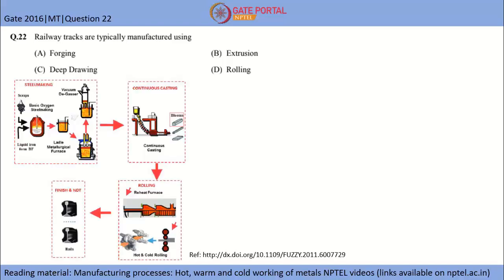So, this is a schematic which tells you how from steel making the railway tracks are manufactured. In extractive metallurgy, from a basic oxygen furnace through ladle furnace secondary steel making you get steel, and after that you cast the steel using a continuous casting process. Then rolling is done of these blooms and billets.